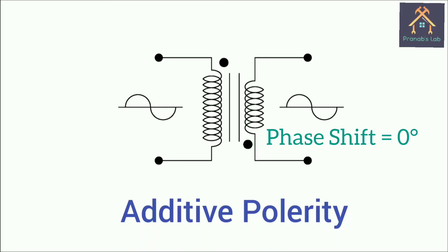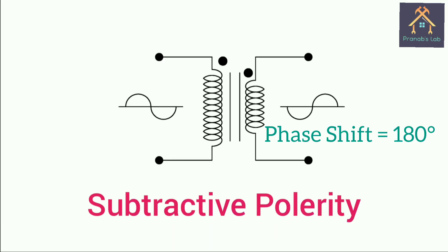In additive polarity of transformer, the phase sequence of primary and secondary side is same. And in subtractive polarity of transformer, the phase sequence of primary and secondary side is inverse to each other.